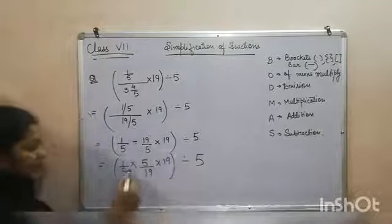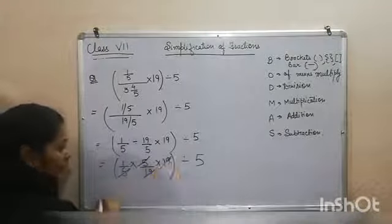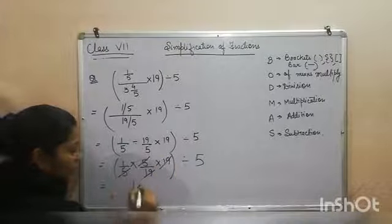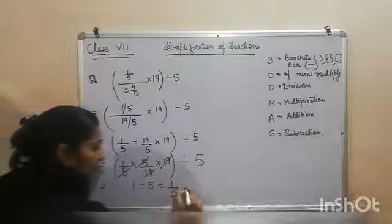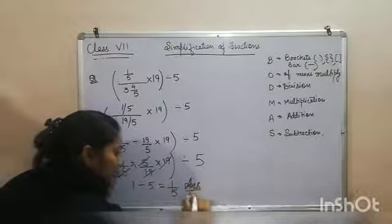Now you can cancel the terms which are getting cancelled. What we got? 1 divided by 5, that is equal to 1 by 5. This is our answer.